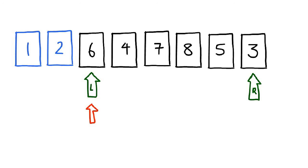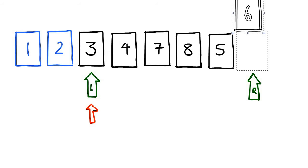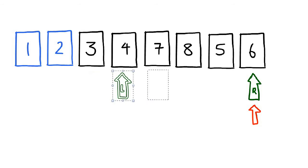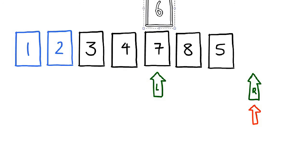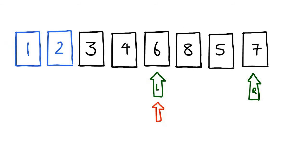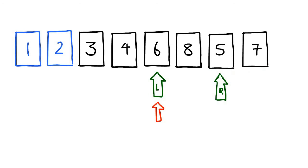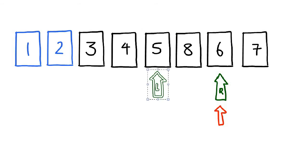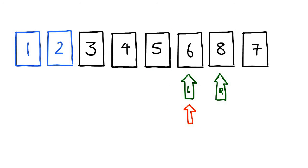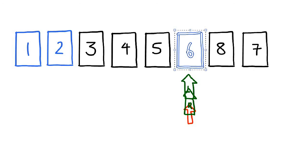So now, six is our pivot. Right off the bat, a swap is made. We move our left pointer onwards, and when it hits seven, a swap is made. The right pointer moves in once and we hit five — once again a swap is made. Finally, six and eight is swapped. The left and right pointers are now pointing at the same position, meaning that six is in place.